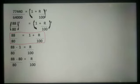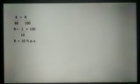So, 88 upon 80 is equal to 1 plus R upon 100. Taking 1 from the right hand side to the left hand side: 88 upon 80 minus 1 is equal to R upon 100. On solving, 88 minus 80 upon 80 is equal to R upon 100. So, 8 upon 80 is equal to R upon 100, and R is equal to 1 upon 10 into 100, and R is equal to 10% per annum.